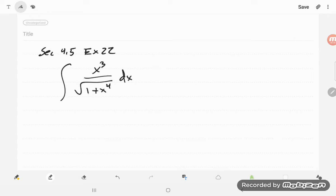I look at this and I see the 1 plus x to the fourth inside the square root down there, so I'm going to go with u equal 1 plus x to the fourth,